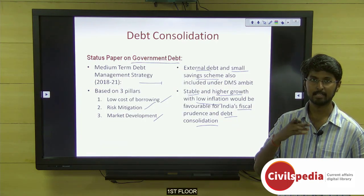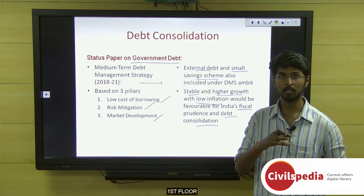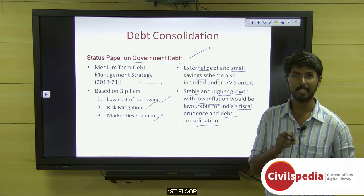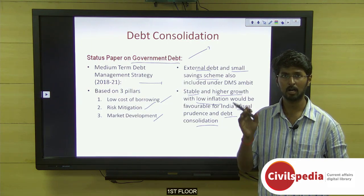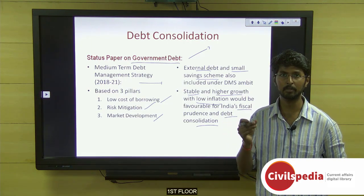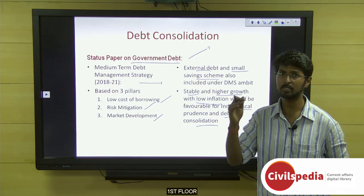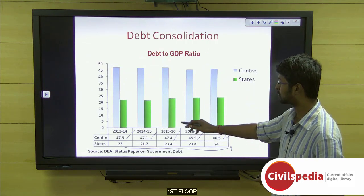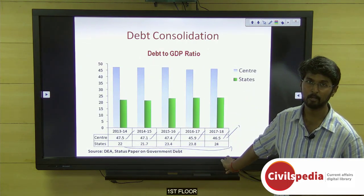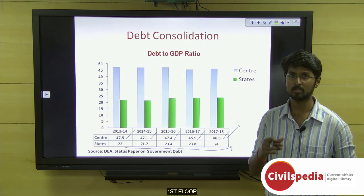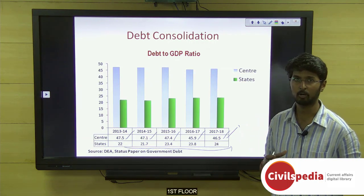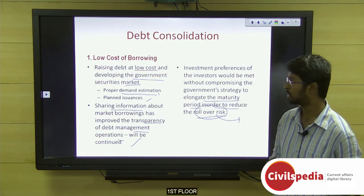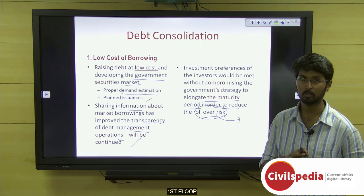The status paper largely focuses on central government debt. For state governments, the NK Singh Committee recommended each state have its own debt trajectory to allow the center to track states' debts individually — but this has not been implemented by the central government. Hence the states' debt-to-GDP ratio keeps increasing, and the central government needs state collaboration to address this.